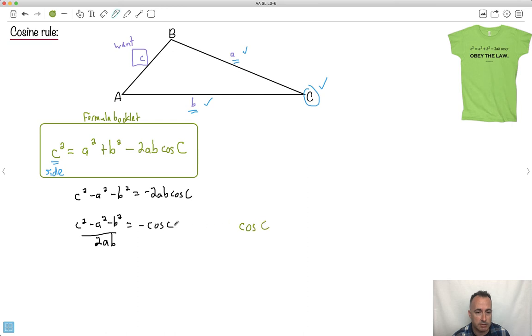So it'll be like this. It'll be cos C equals, all these here are going to flip signs. This C squared is going to become minus, this is going to be plus and plus. So it's going to be A squared plus B squared minus C squared, all that over 2AB. And this is the other version of it that you get on your formula booklet.